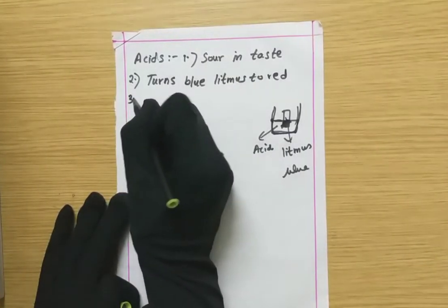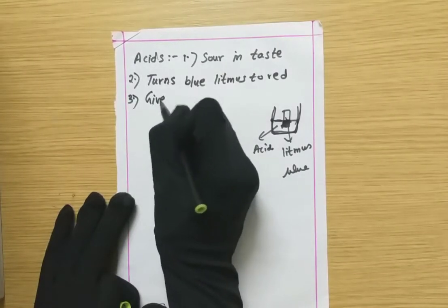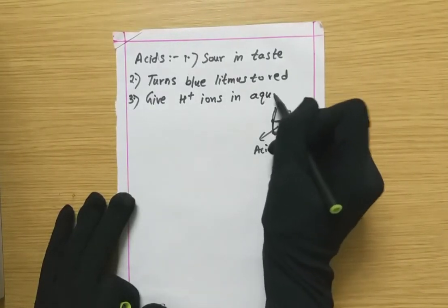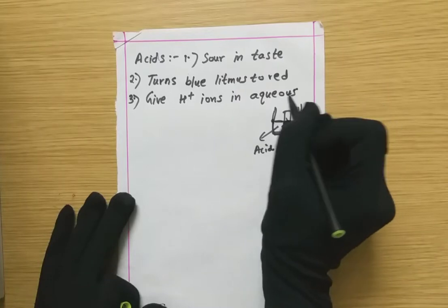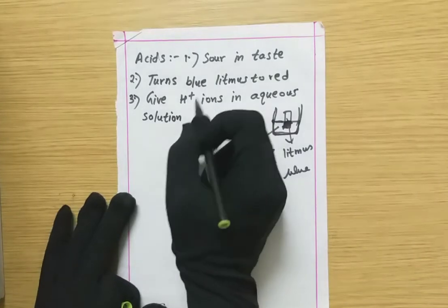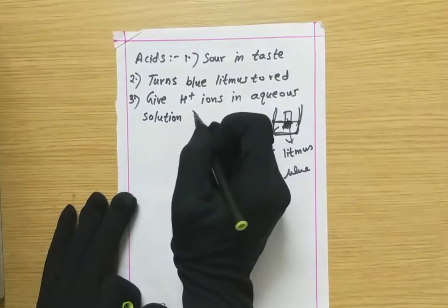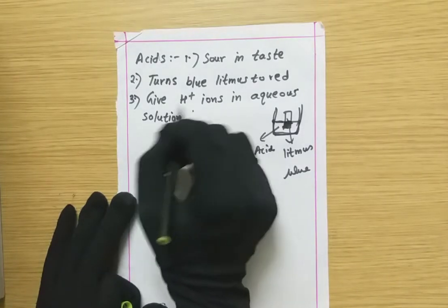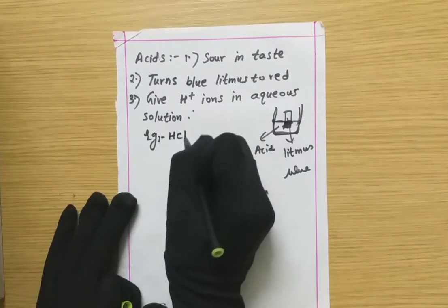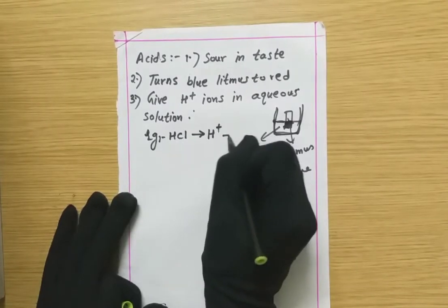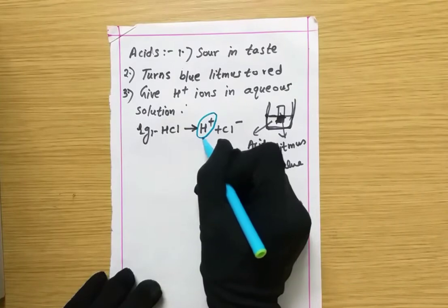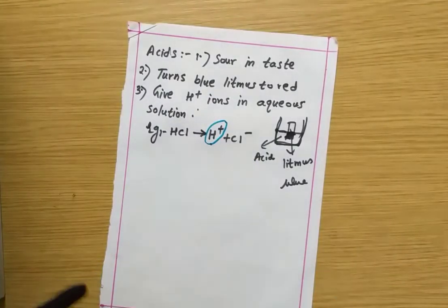Acids give H+ ions in aqueous solution. Aqueous solution means a mixture where a solid is combined in a liquid. Whenever an acid is present in an aqueous solution and we dissociate the ions, H+ ions are produced. For example, HCl on dissociation gives H+ and Cl⁻ ions. The H+ ions indicate the presence of an acid.